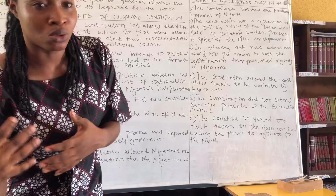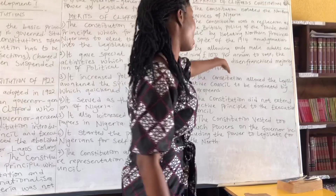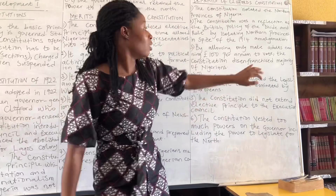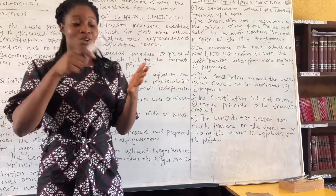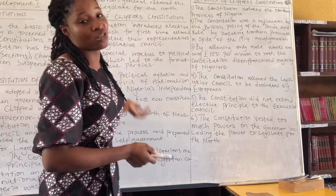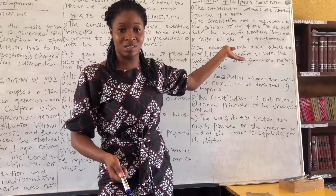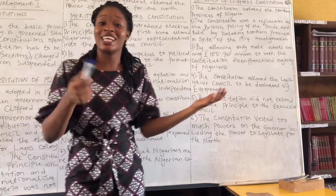Demerit three: by allowing only males earning 100 pounds per annum to vote, the constitution disenfranchised the majority of Nigerians. 'Disenfranchised' means not allowed to vote. As a Nigerian, you had to be at least 21 years old and earn 100 pounds a year. In the 1920s, how many Nigerians were even educated enough to earn 100 pounds annually? If you earned one pound per month, you'd earn only 12 pounds per year.